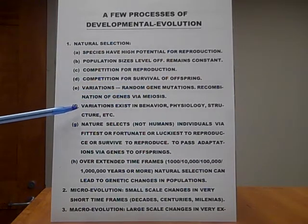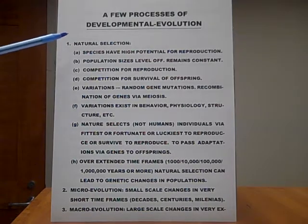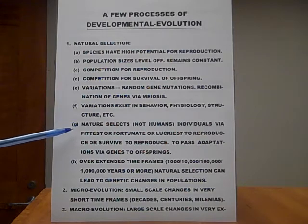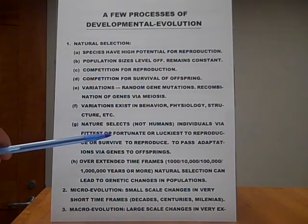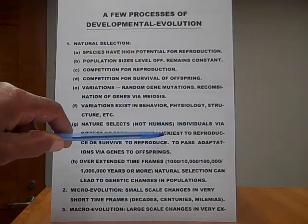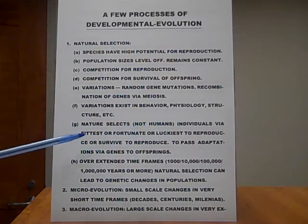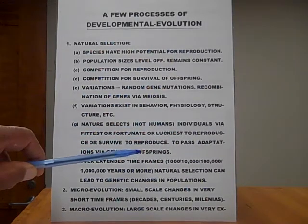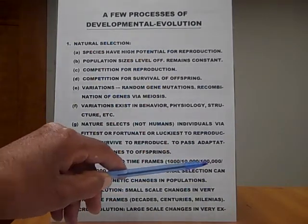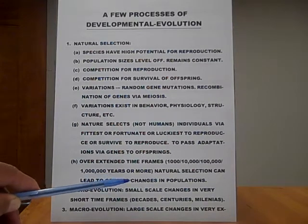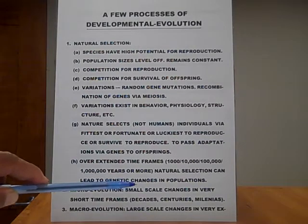F: Variations exist in behavior, physiology, structure, etc. G: This is natural selection — nature selects, not humans, individuals. Nature selects individuals via fitness or fortunateness to reproduce or survive, to pass adaptations via genes to their offspring. H: Over extended time frames, such as 1,000, 10,000, 100,000, 1,000,000 years or more, natural selection can lead to and does lead to genetic changes in populations.